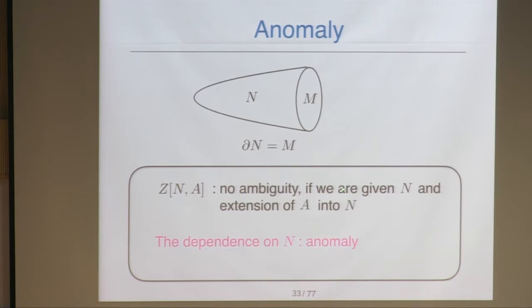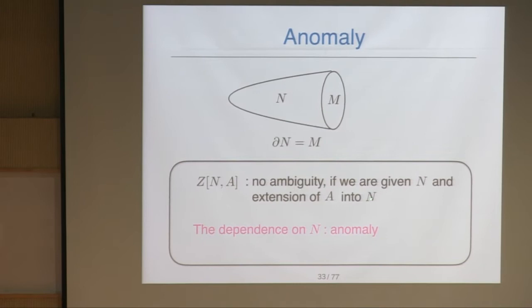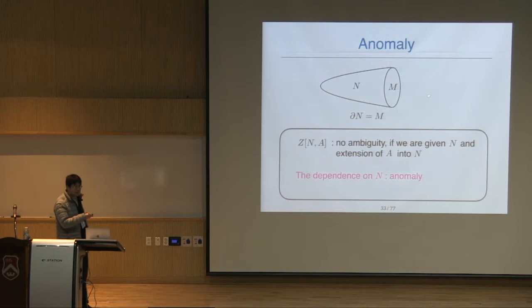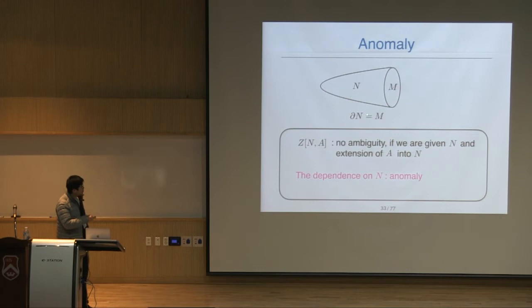The modern interpretation is that the dependence on N is the anomaly. We are originally interested in the theory on the D-dimensional manifold M. But to fix the partition function, we have to extend it to D+1 dimensions. If the partition function depends on this (D+1)-dimensional manifold, then that is interpreted as an anomaly.